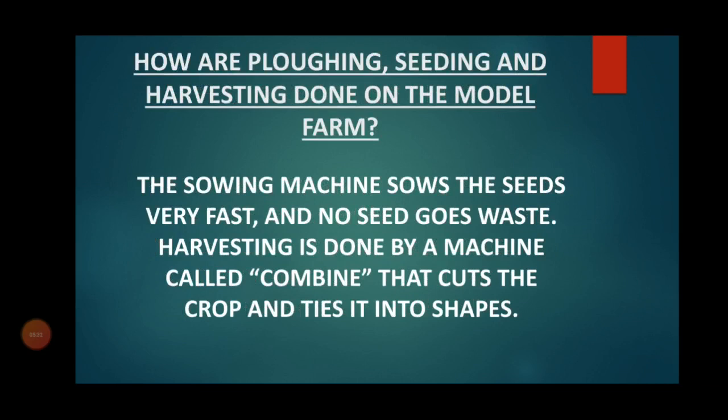How are ploughing, seeding, and harvesting done on the model farm? The sowing machine sows the seeds very fast and no seed goes to waste. Harvesting is done by the machine called the combine, which cuts the crops and ties them into sheaves.